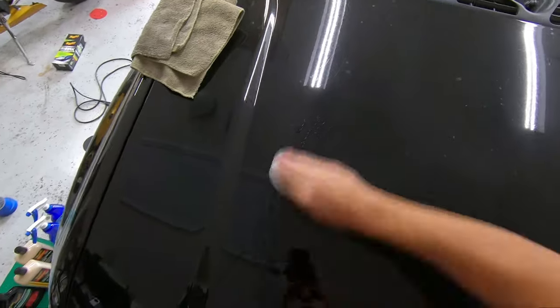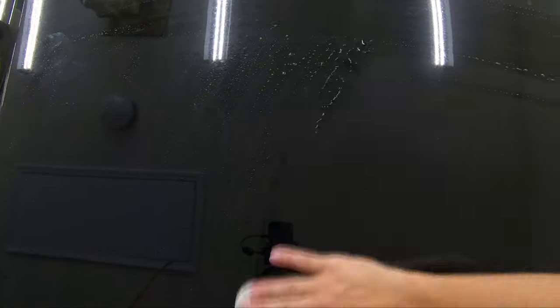We'll be starting off with spraying the area with Optimum No Rinse, ONR, and clay barring the surface to get the surface level contaminants out. This just ensures that there's nothing extra on the surface that can damage the paint or get picked up in our pads when we begin our tests.